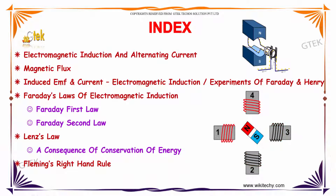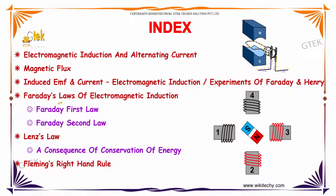This is the index we are going to see. The first one is electromagnetic induction and alternative current: magnetic flux, induced EMF, current, electromagnetic induction. Under that we are going to see about the experiments of Faraday and Henry's law. And further we are going to talk about Faraday's law of electromagnetic induction — the first law and second law — followed by Lenz's law and Fleming's right-hand rule.